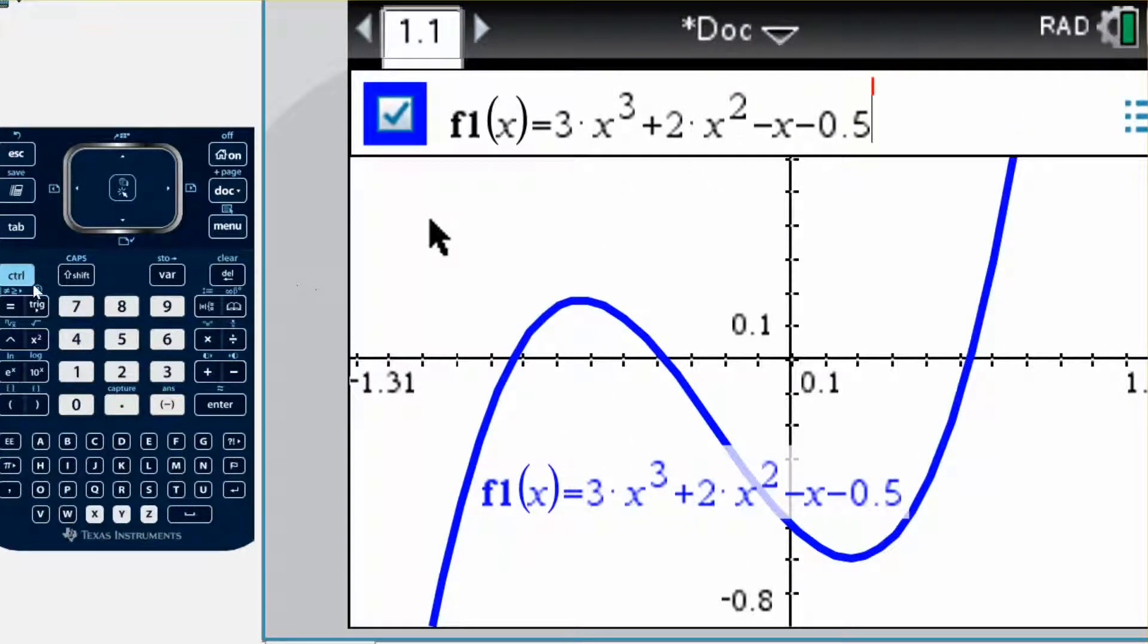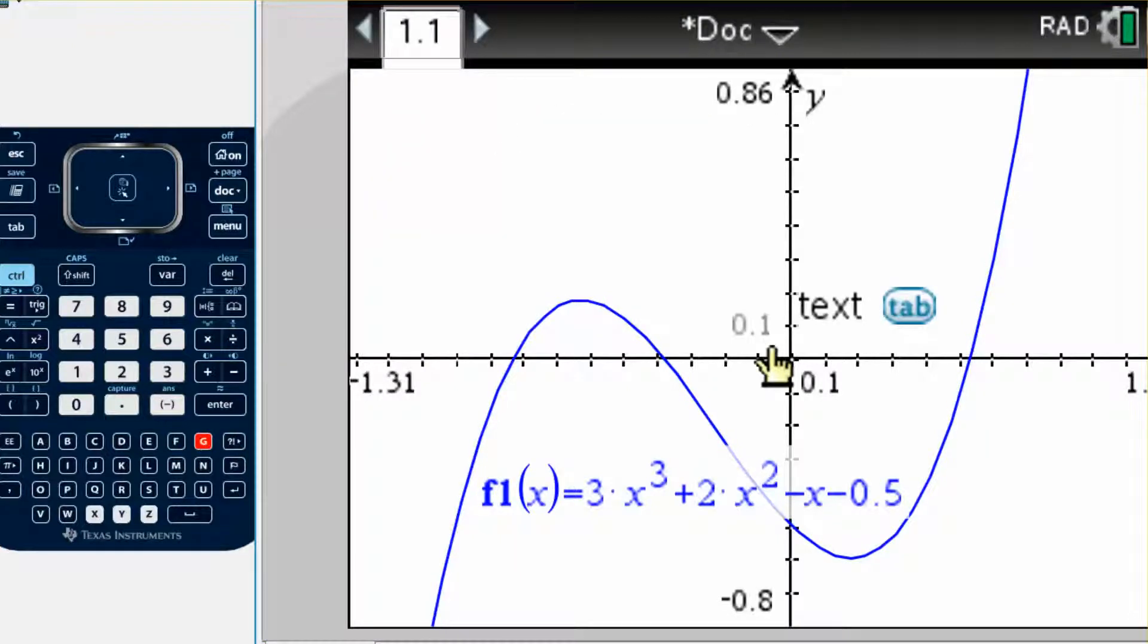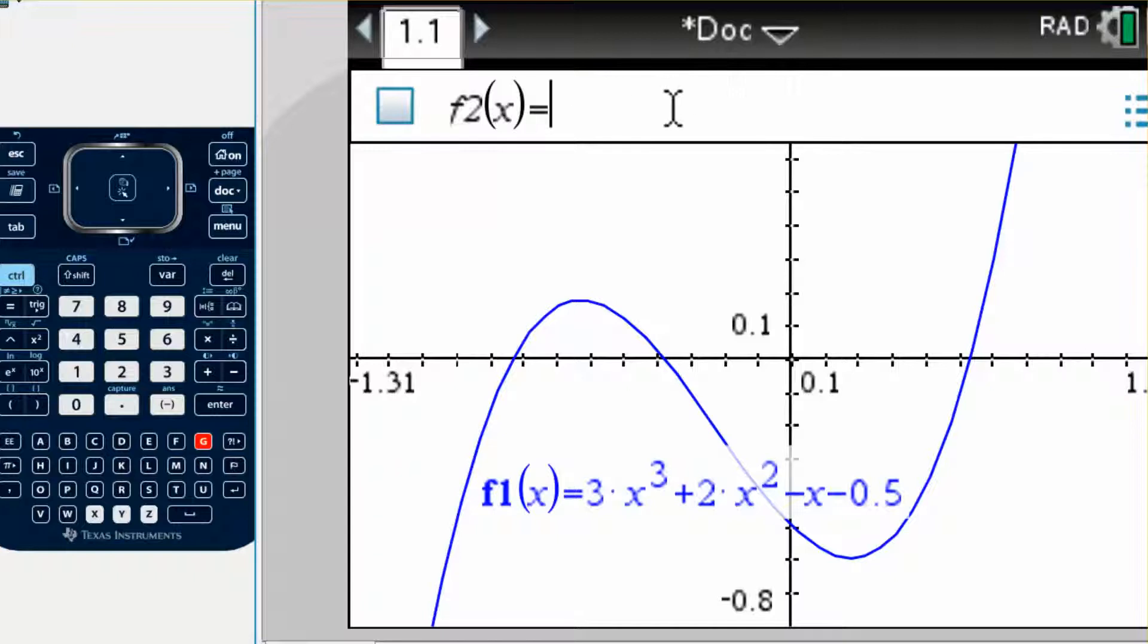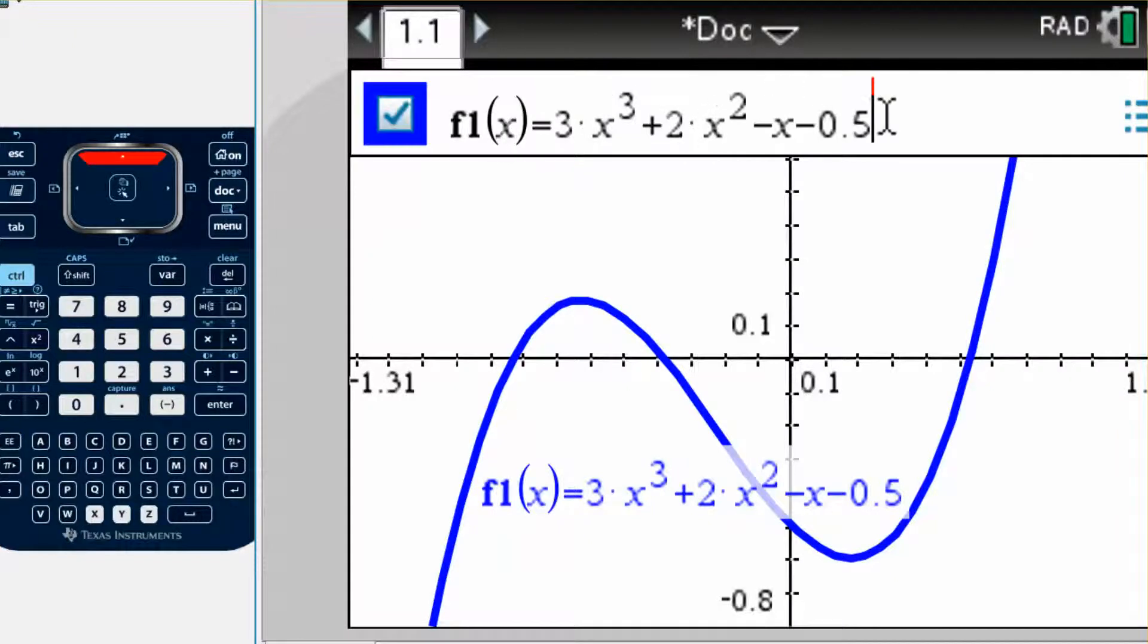If you want to ever get to the function part, just go Ctrl+G. It brings up your function, and then you push up or down. This is offering me to do f2. If I go back to f1, the one I've already done, I'd push up on my calculator and it brings me back to the one I've done.